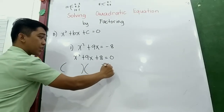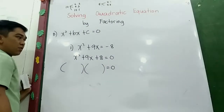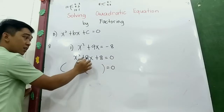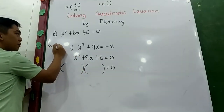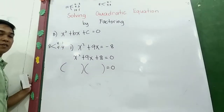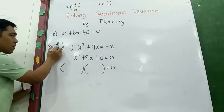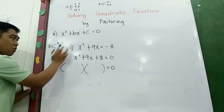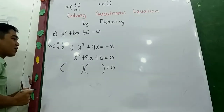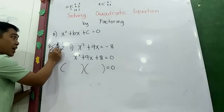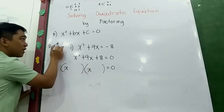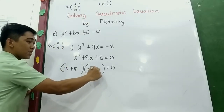Recall your Grade 8 lesson. Get the factors of 8 whose sum is 9. Factors of 8 are: 8 times 1, or 4 times 2. Check the sums: 8 + 1 = 9. So the factors we use are 8 and 1. The factored form is (x + 8)(x + 1) = 0.